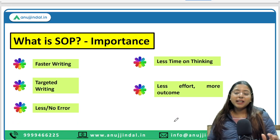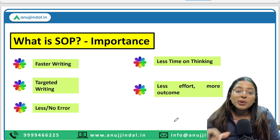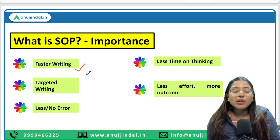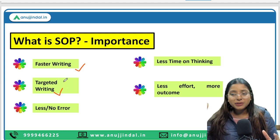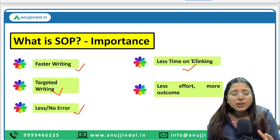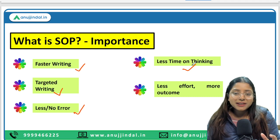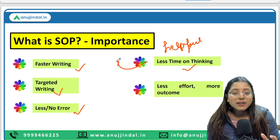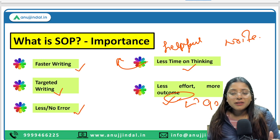Let's talk about the most important thing: SOP. If you follow the SOP, you will write faster compared to others. You will have targeted writing — knowing exactly what keywords to stick to in order to get more marks. Following SOP will significantly reduce your errors. You won't spend too much time thinking, because in the exam when you see the question, you already have a structure. It requires less effort and more outcome in the form of good numbers.